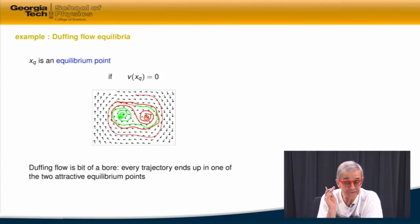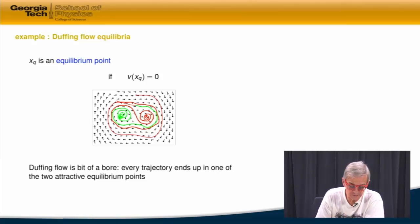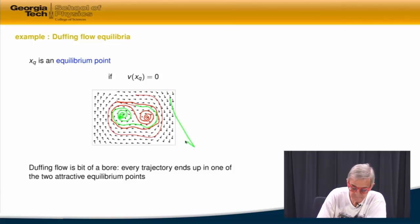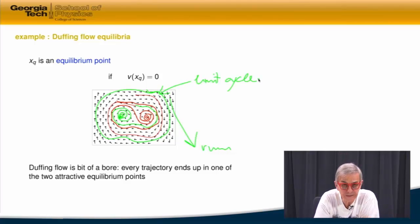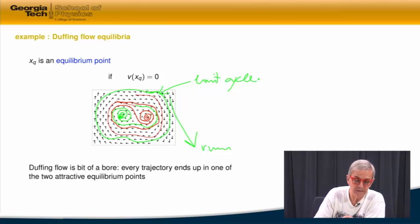But in two-dimensional dynamics, that's basically all that happens. Either you fall into the hole, or you run away, or maybe you run on a cycle — that's called a limit cycle. If you learn your nonlinear dynamics from the book by Strogatz, that's basically what that book will do for two thirds of the time: study what happens in two dimensions.